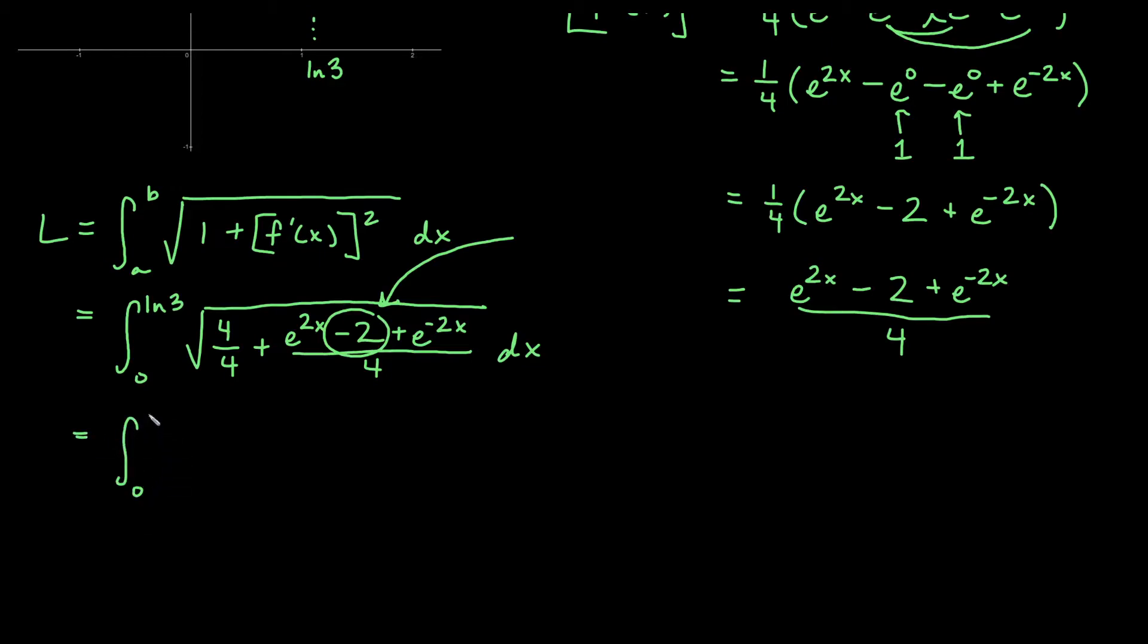What we get is integral from 0 to ln of 3, of course. We get e to the 2x plus 2 plus e to the negative 2x over 4. Now what is different about this is very minimal to what was originally different.